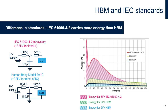On the right side, we compare the energy carried by the current waveform of these two standards. For the 8-kilovolt IEC, the current is shown in red. With the same 8-kilovolt voltage, HBM current is in green. For 2-kilovolt HBM — the most commonly specified level for integrated circuits — we obtain the blue curve. The energy of ESD, which corresponds to the area below the curve, is much lower for 2-kilovolt HBM compared to 8-kilovolt IEC 61000-4-2. As a consequence, IEC 61000-4-2 carries more energy than HBM. This is why integrated circuits specified with HBM will still require an external ESD protection rated per the IEC standard.